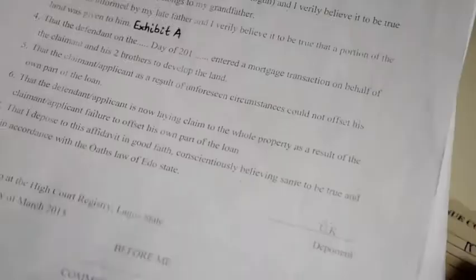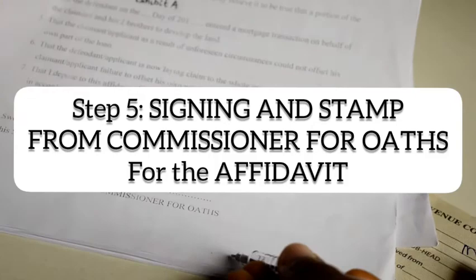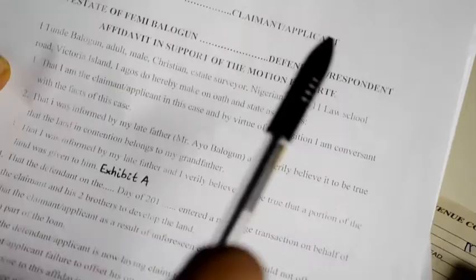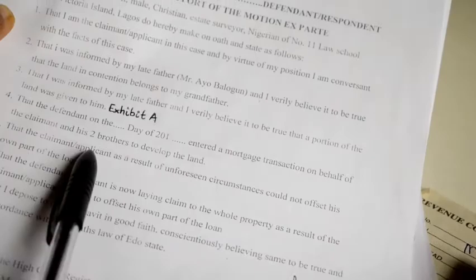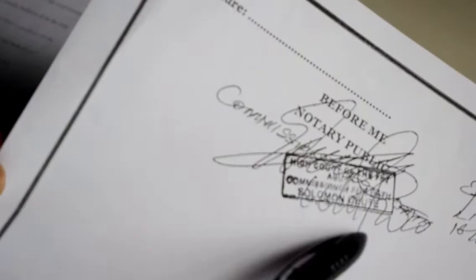The fifth step is where you append your signature in front of the commissioner for oaths. Whoever the deponent is — in my affidavit it is Tunde Balogun — would come and sign before the commissioner for oaths. The commissioner for oaths gives you his stamp. I'm using something already done in front of the commissioner for oaths. The signature is appended and the commissioner for oaths affixes a stamp on that particular place for the deponent to sign.